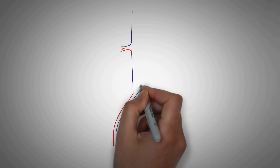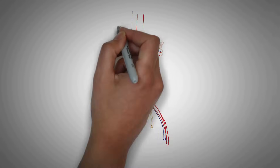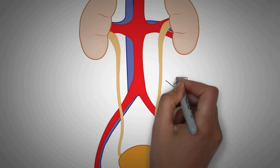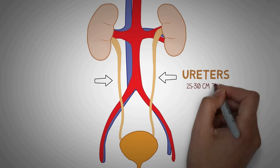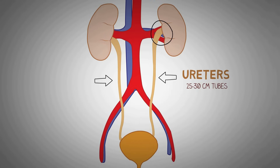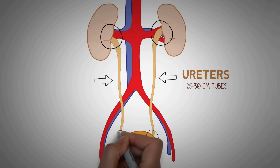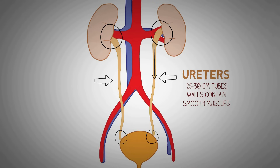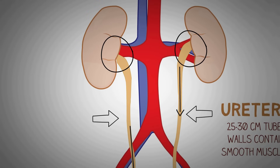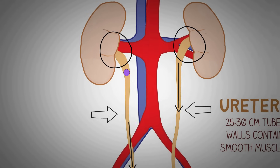Moving forward with the structure of the urinary system — the urine formed in the kidneys is passed down through structures known as the ureters. Ureters are 25 to 30 cm long tubes that exit the kidney through the hilum and run down into the urinary bladder. The walls of the ureters have smooth muscles that help to propel the urine forward. A kidney stone can move from the kidney and become lodged inside the ureter, blocking the flow of urine and causing sharp cramp-like pain known as renal colic.